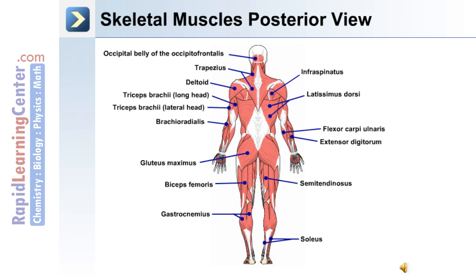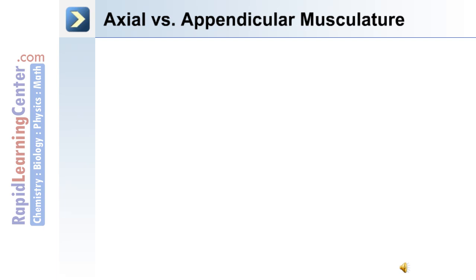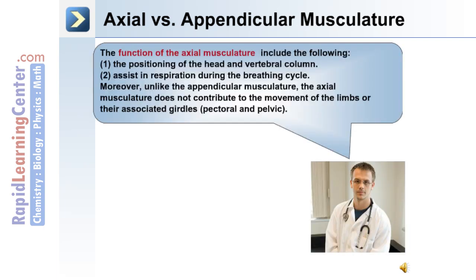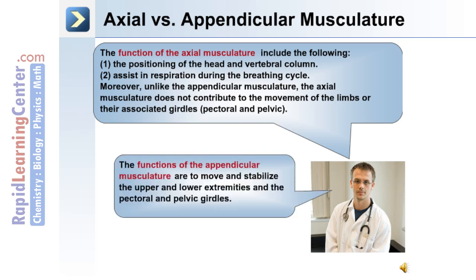The semitendinosus muscle, and the soleus muscle of the lower leg. The difference in function between the axial and appendicular musculature: the function of the axial musculature includes positioning of the head and vertebral column, and assisting in respiration during the breathing cycle. Unlike the appendicular musculature, the axial musculature does not contribute to movement of the limbs or their associated pectoral or pelvic girdle. The functions of the appendicular musculature are to move and stabilize the upper and lower extremities and their associated pectoral and pelvic girdles.